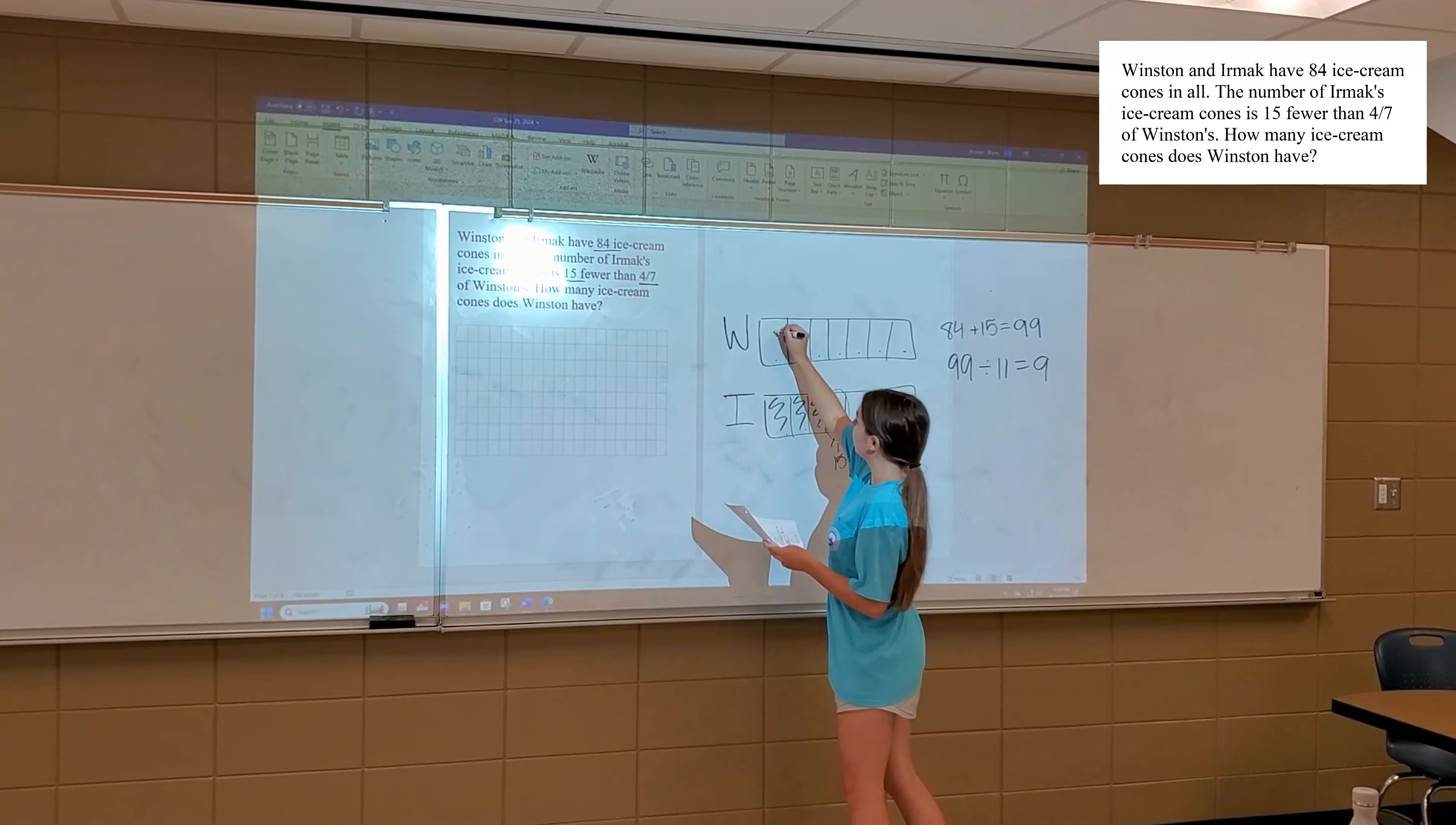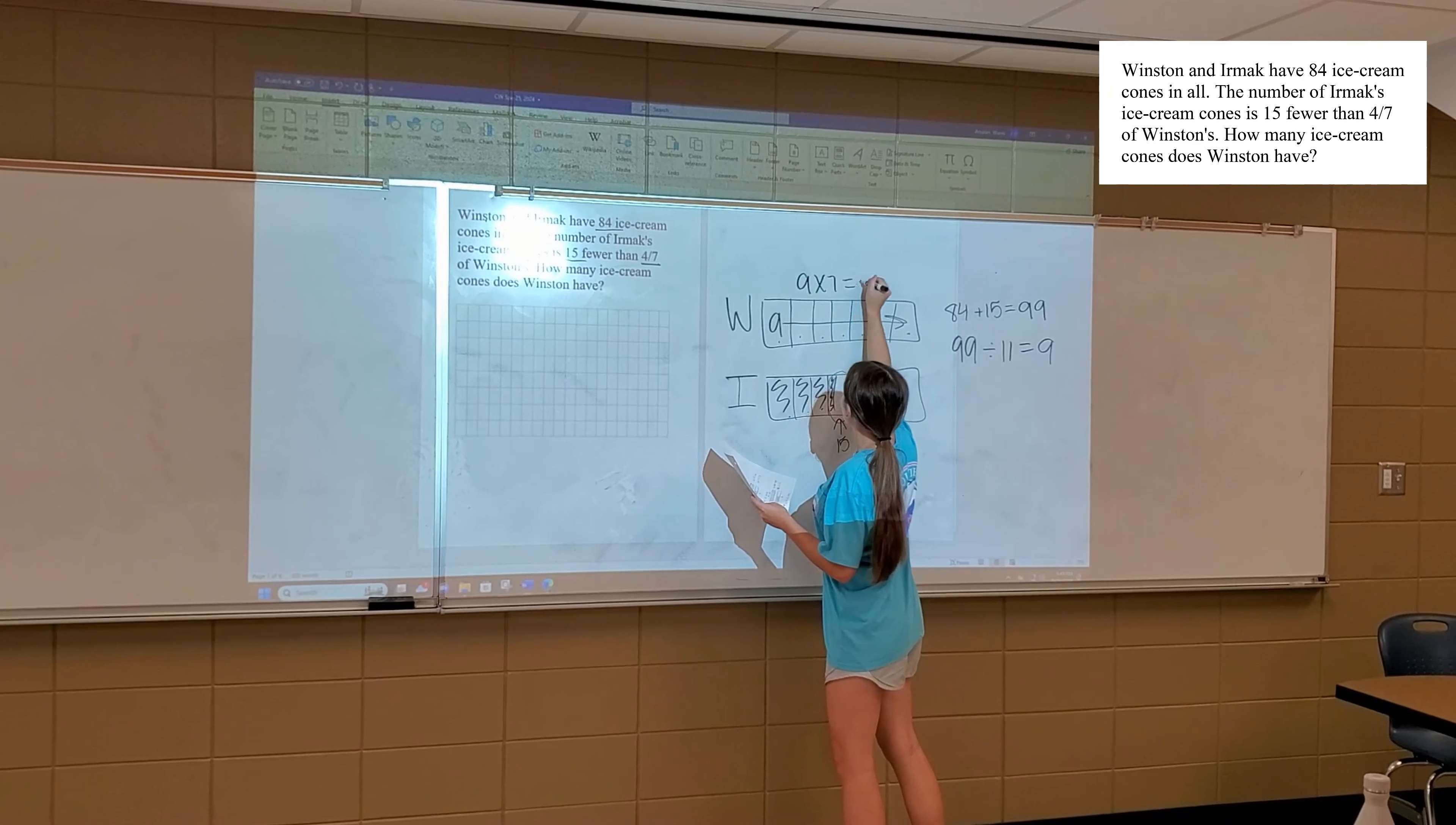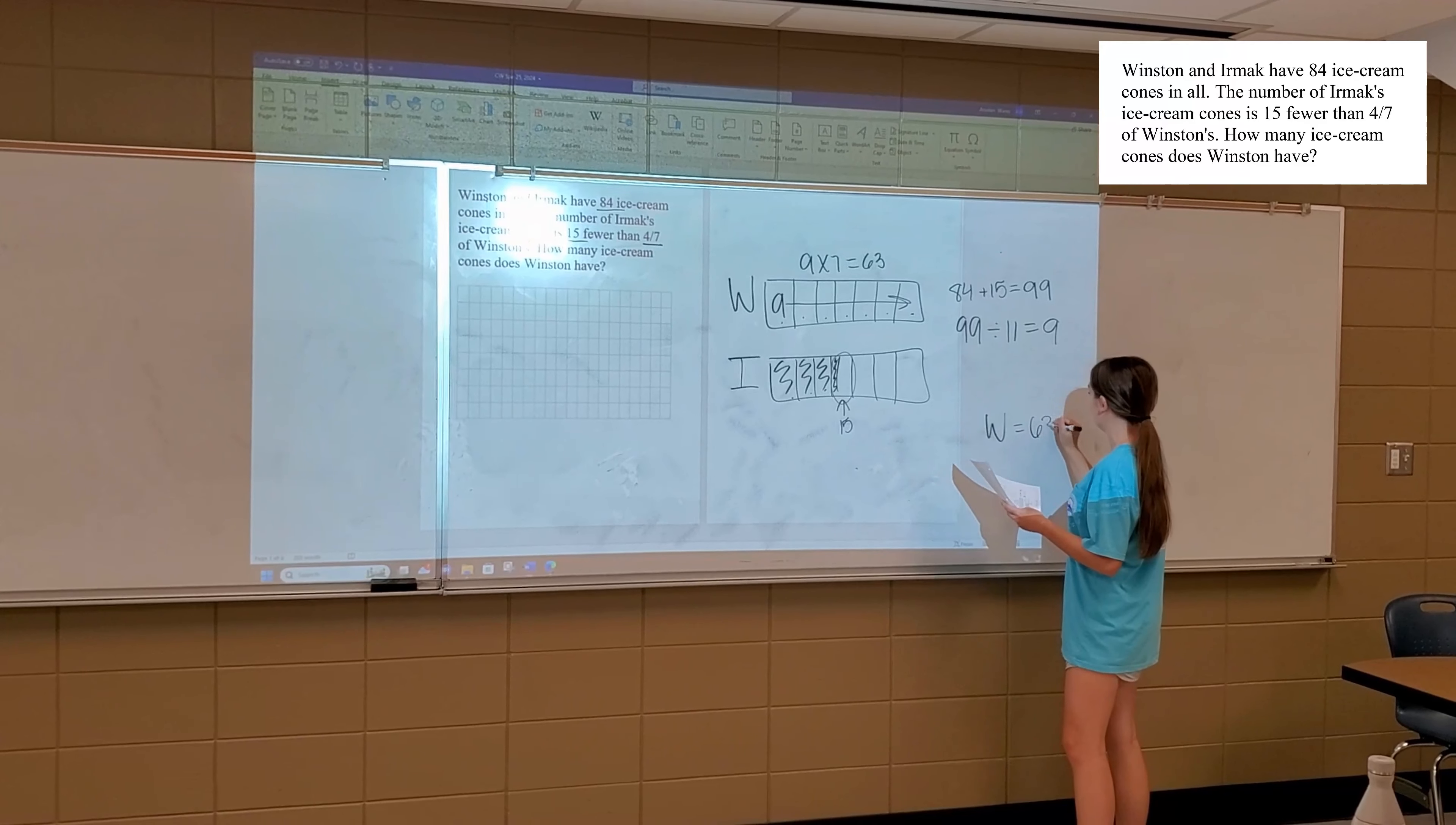So each box is worth nine. And W has seven squares. So we're going to do nine times seven to get 63. And so W has 63 cones.